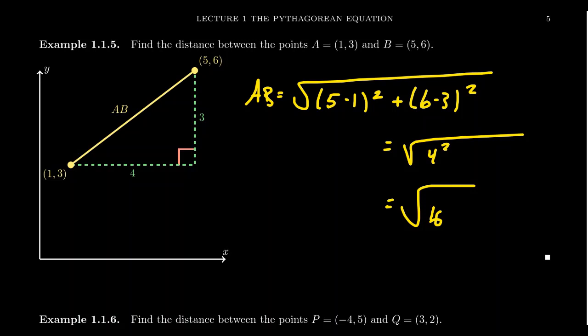So 5 minus 1 squared is 4 squared, which is 16. If you take 6 minus 3 squared, it's going to give you 3 squared, which is 9. 16 plus 9 is 25, and the square root of 25 is 5. And so we see that the length, that is the distance between the point A and the point B is going to be 5 units.